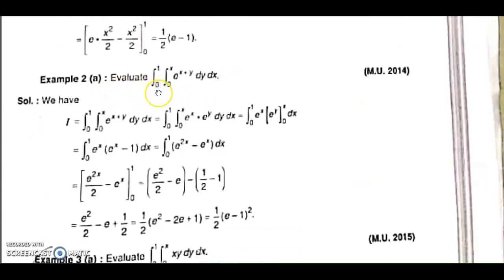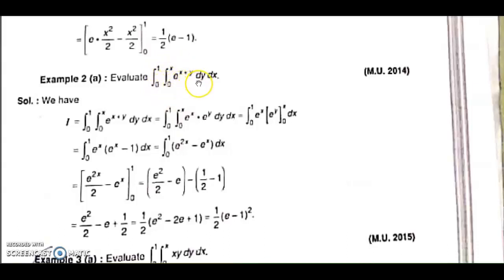Consider this example: evaluate the integral from 0 to 1, 0 to x, of e raised to x plus y, dy dx. The integrand e^(x+y) can be written as e^x into e^y. As already told, inner integral limits are functions of x, so they are the limits of y. Therefore, our first variable of integration is y. For y, e^x is constant, so it is taken outside and e^y is integrated as e^y, with limits 0 and x.